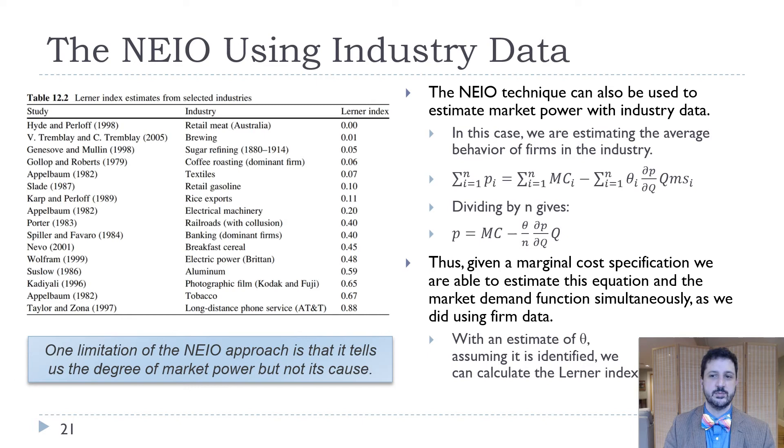We can also use it to estimate market power with industry data. In this case, you're sort of summing up over the entire industry. We have some examples here where retail, meat, brewing, sugar refining, they have a very, very low Lerner index, meaning there's a lot of competition. Whereas tobacco, photographic film, keeping in mind this was from the eighties and nineties, long distance phone service, yeah that used to be a thing we had to pay for, had much less competition. Electric power, breakfast cereal is about 0.45. So those are all estimates that have higher Lerner indexes or less competition.